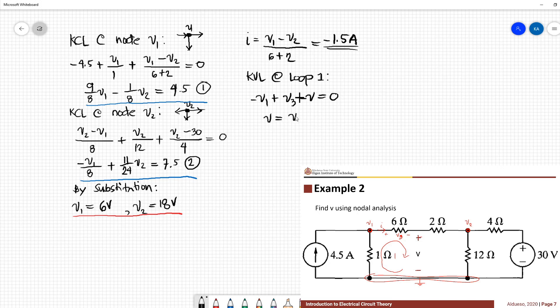So solving for V, we have V1 minus V3 where V3 is equivalent to negative 1.5 times 6. So V is equivalent to 15 volts.